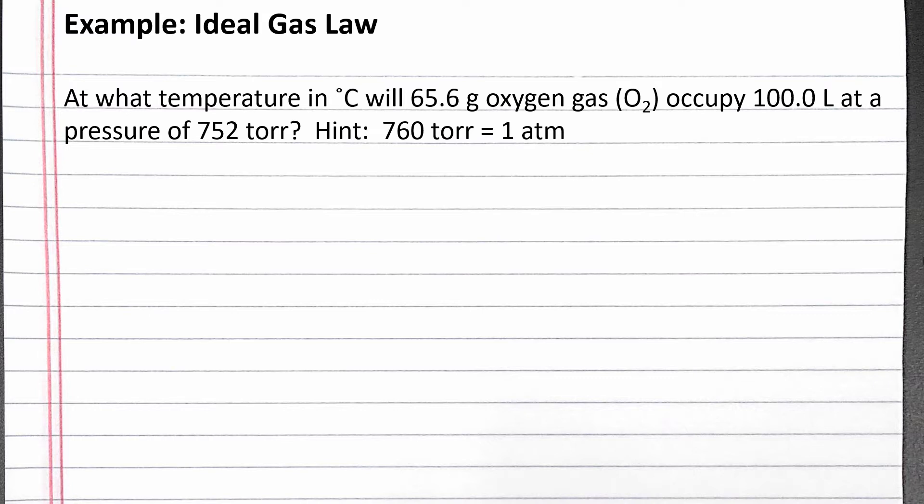We're given the conversion factor from torr to atmospheres. We can start with the ideal gas law, where P is pressure, V is volume, n is moles of gas, R is the ideal gas law constant, and T is absolute temperature.